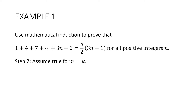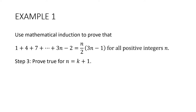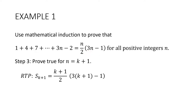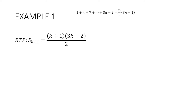Step 2 is to assume that it's true for n equals k. We could write out all of this with k substituted in, or we could use sigma notation. The sum of the first k terms must be equal to k over 2 multiplied by 3k minus 1. Step 3: prove true for n equals k plus 1. I'm going to start with a required to prove statement so I know where I'm heading. The sum of k plus 1 terms is going to be equal to k plus 1 over 2, times 3 times k plus 1 take away 1, and I'll tidy that up.